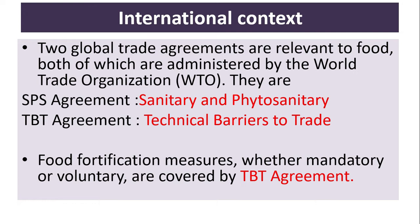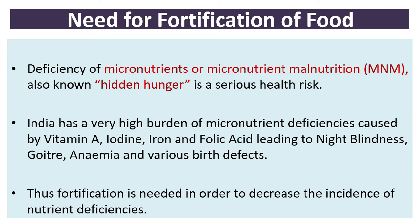In the international context, two global trade agreements are relevant to food, both administered by the World Trade Organization: the SPS agreement, meaning Sanitary and Phytosanitary, and the TBT agreement, meaning Technical Barriers to Trade. Food fortification measures, whether mandatory or voluntary, are covered by the TBT agreement.